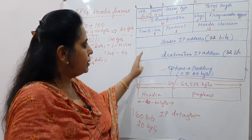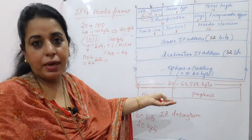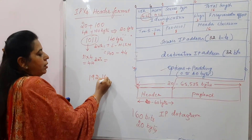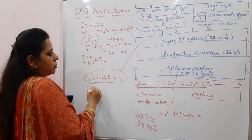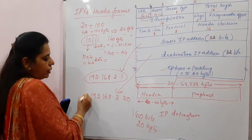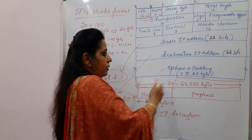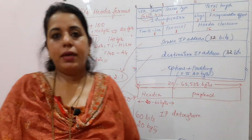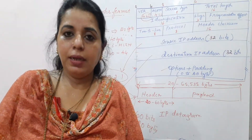The remaining fields include time to live, protocol, and header checksum. The source address and destination address fields each use 32 bits, since an IPv4 address is always 32 bits written in dotted decimal notation. The rest of the fields in this IPv4 header format will be explained in the next session.